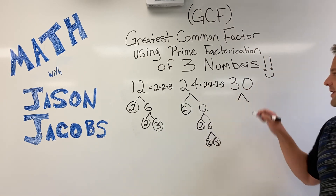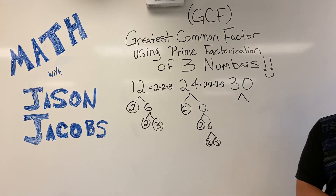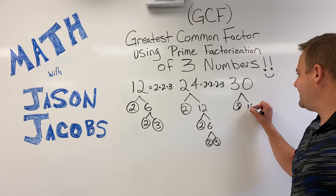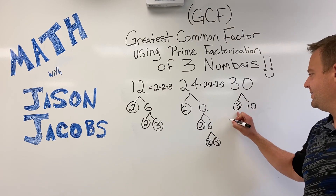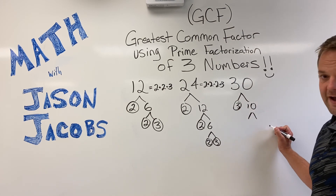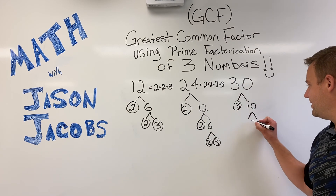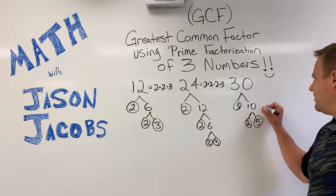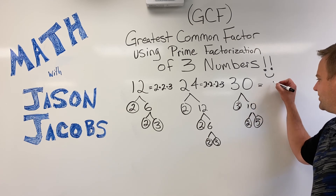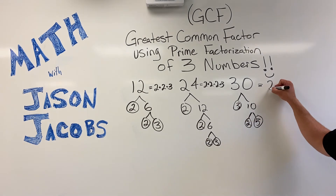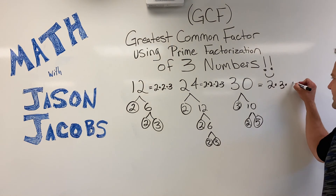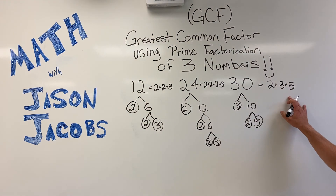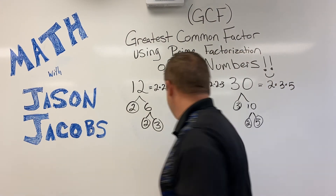And now the prime factorization of 30. 30 factors out into three and ten. Three is prime, ten is composite and can still factor down. Ten factors out into two and five. So the prime factorization of 30 is two times three times five. I like writing the prime factors in order from least to greatest.